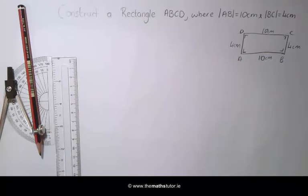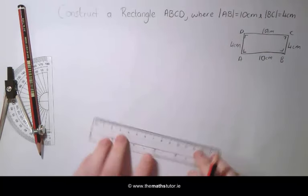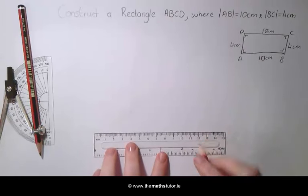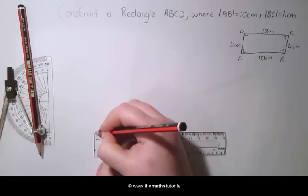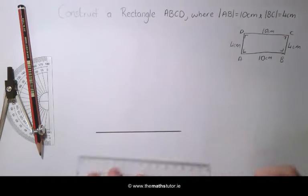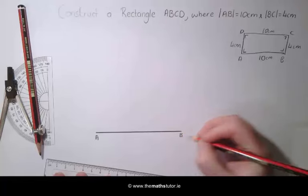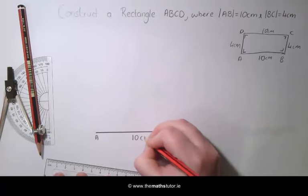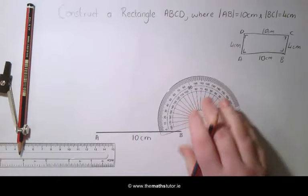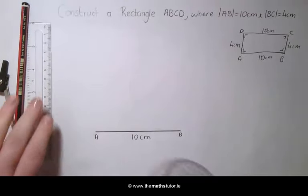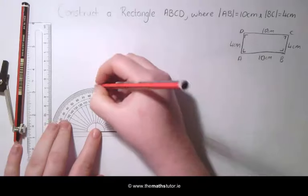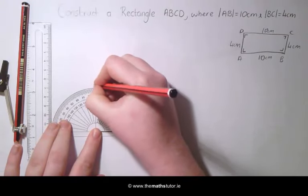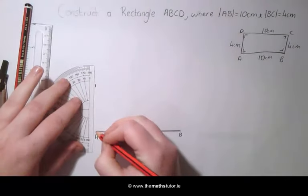We start by drawing a line segment AB of 10cm. Taking our protractor, we are going to place it at A and mark an angle of 90 degrees. We are going to draw a line through this.